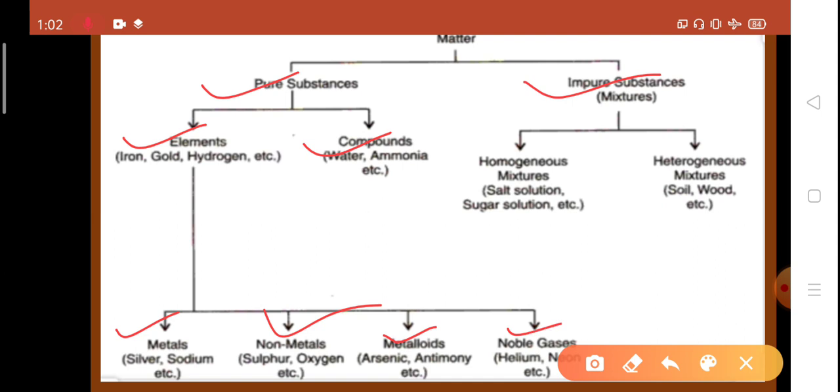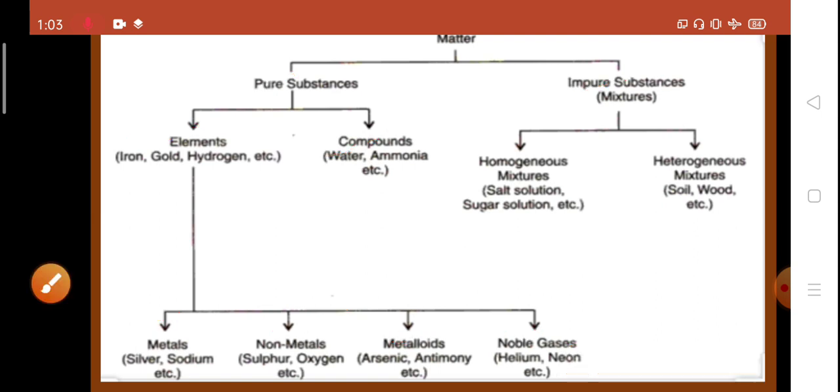At last, noble gases, these are the elements, which are also known as inert gases, as they don't react chemically with other elements or compounds. They are only six in number, and their names are as follows, helium, neon, argon, xenon, krypton, and radon.